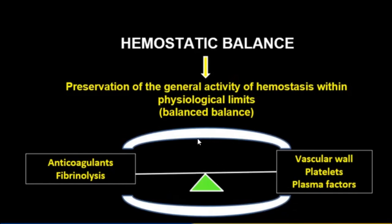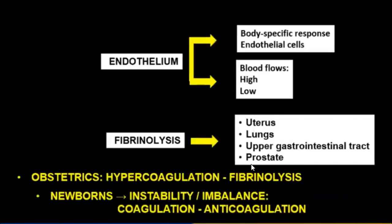Two important considerations: in obstetrics, hypercoagulation occurs as a result of fibrinolysis in newborns, with instability and imbalance of coagulation and anticoagulation. In endothelium, organ-specific responses occur based on blood flow height. Fibrinolysis is particularly relevant in the uterus, lungs, upper gastrointestinal tract, and prostate.